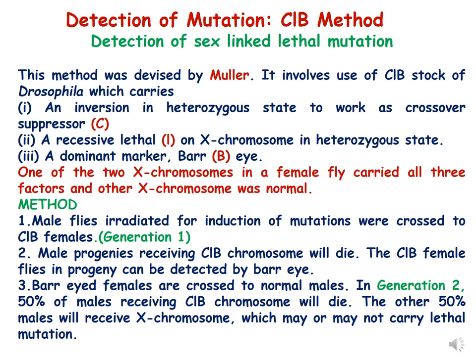This chromosome has a crossover suppressor gene represented by capital C, then a recessive lethal gene represented by small L on the X chromosome in heterozygous state, and a dominant marker represented by capital B, which results in the formation of bar eye. So one of the X chromosomes in the female fly of Drosophila carries all these genes, and the other chromosome is normal.